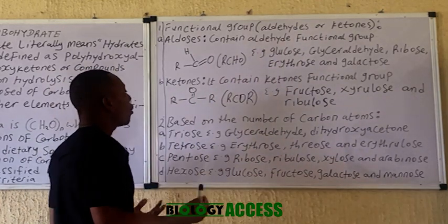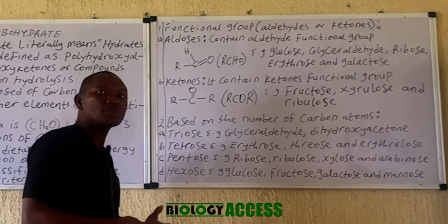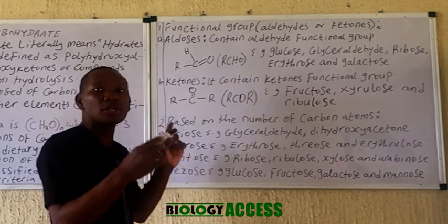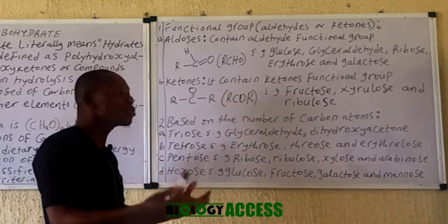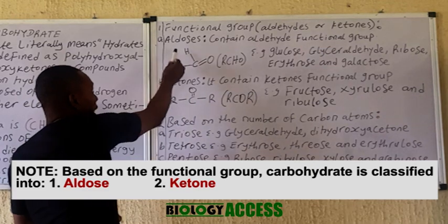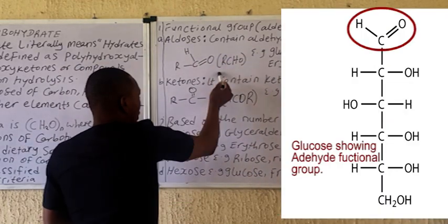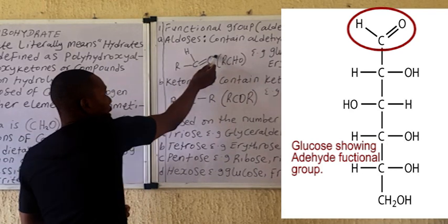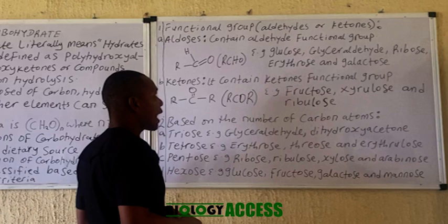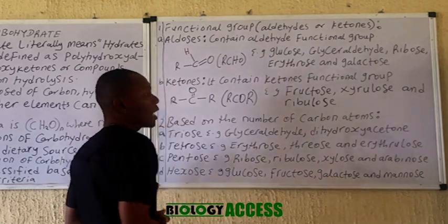Carbohydrates can also be classified based on the number of carbon atoms. The aldehyde group contains the aldehyde functional group, which can be represented structurally on the board. Examples of carbohydrates that contain the aldehyde functional group include the glucose molecule, the glyceraldehyde molecule, ribose, erythrose, and galactose. The structure of glucose indicating the aldehyde functional group is being displayed on the board.